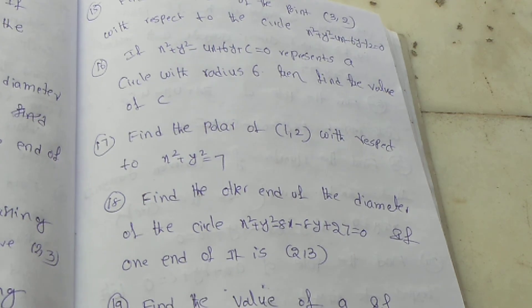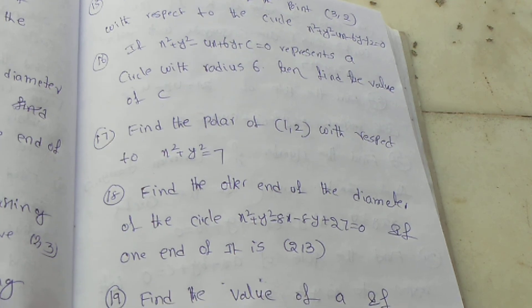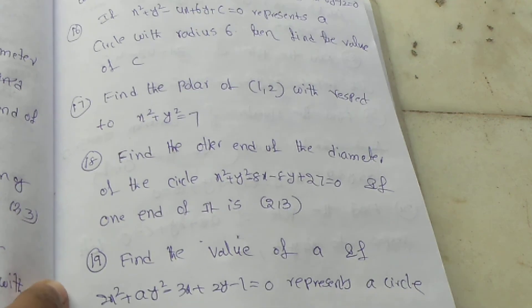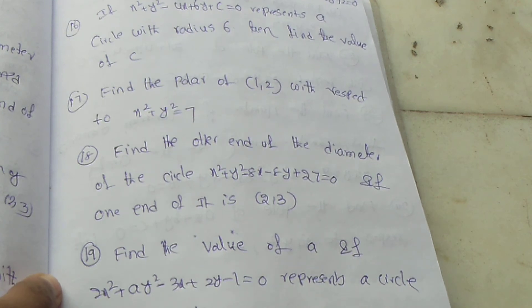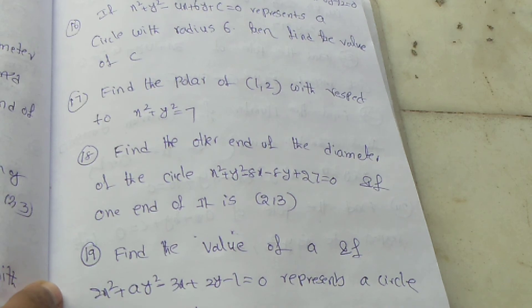Seventeenth question: Find the power of (1, 2) with respect to 2x square plus y square equal to 7. Eighteenth question: Find the other end of the diameter of the circle x square plus y square minus 8x minus 8y plus 27 equal to 0, if one end of it is (2, 3).